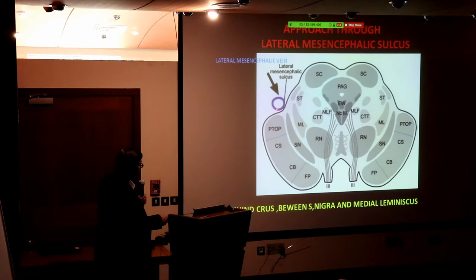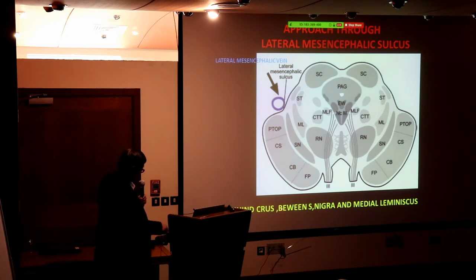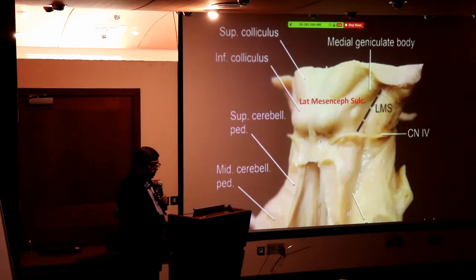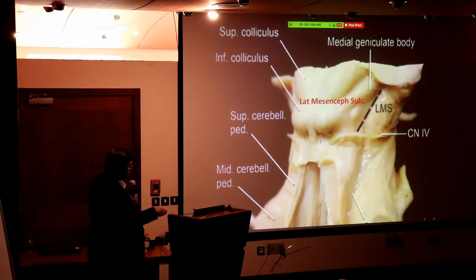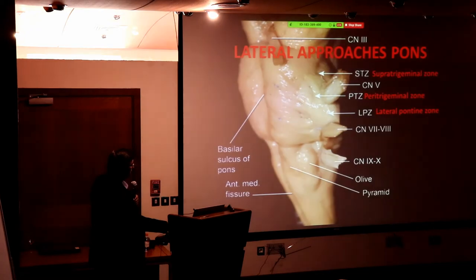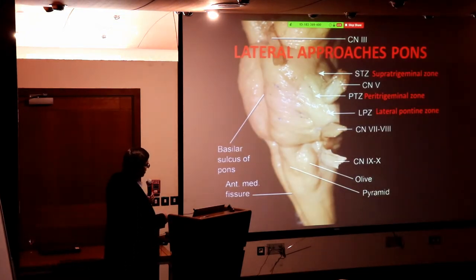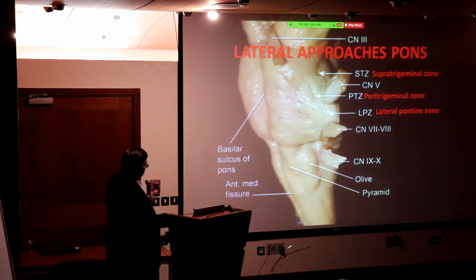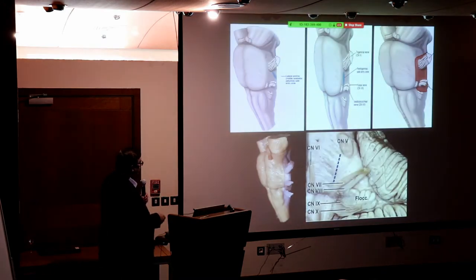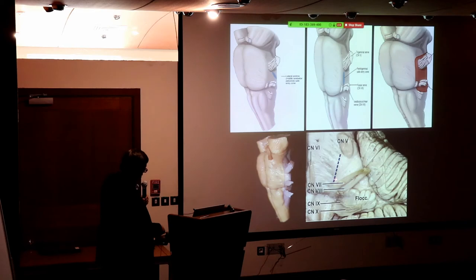The lateral approach to the midbrain uses the lateral mesencephalic sulcus and its accompanying vein. Knowing the anatomy of the cross-section tells you exactly where you can enter safely — behind the crus, between the substantia nigra and the medial lemniscus. For the lateral pons, the peritrigeminal approach: you can go supratrigeminal, peritrigeminal (in front of it), or between the trigeminal and facial nerves inferolaterally.